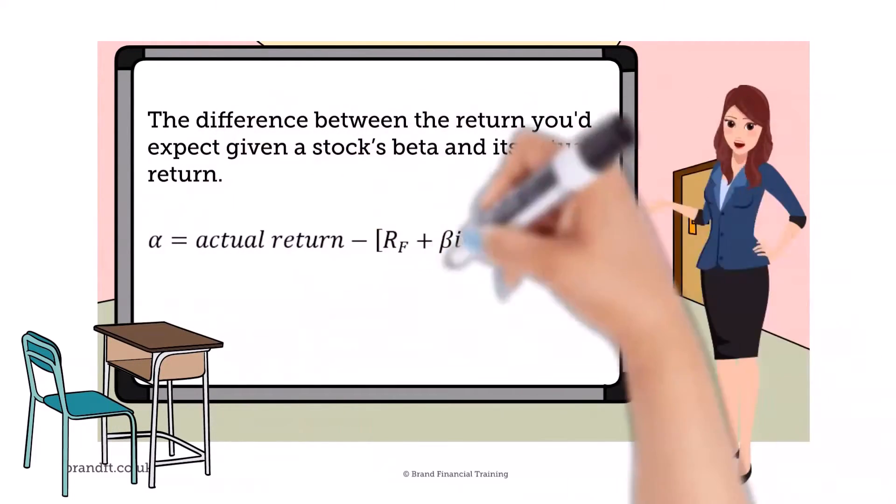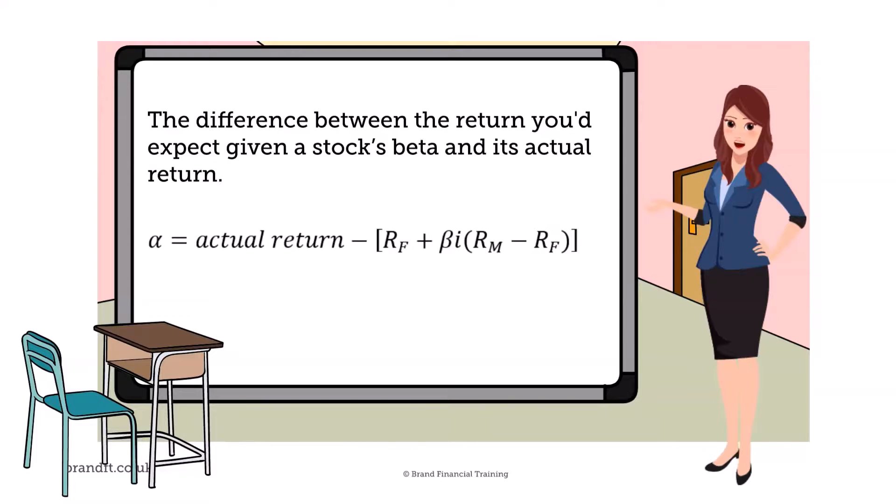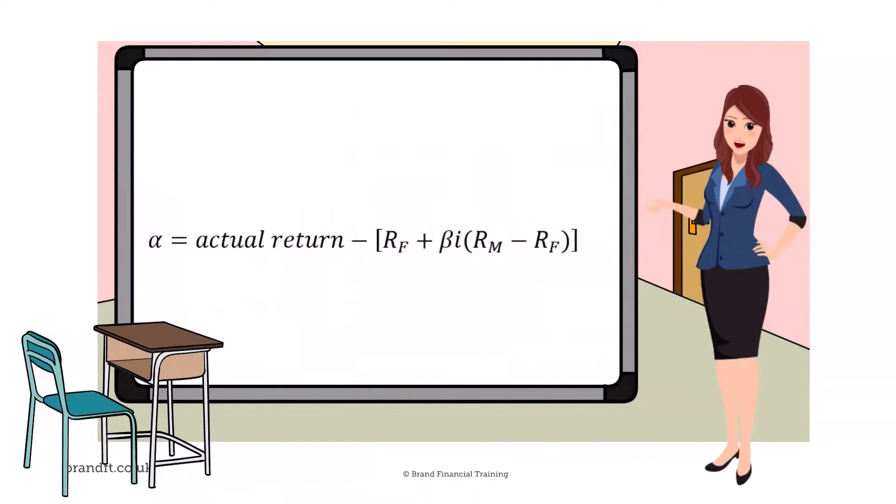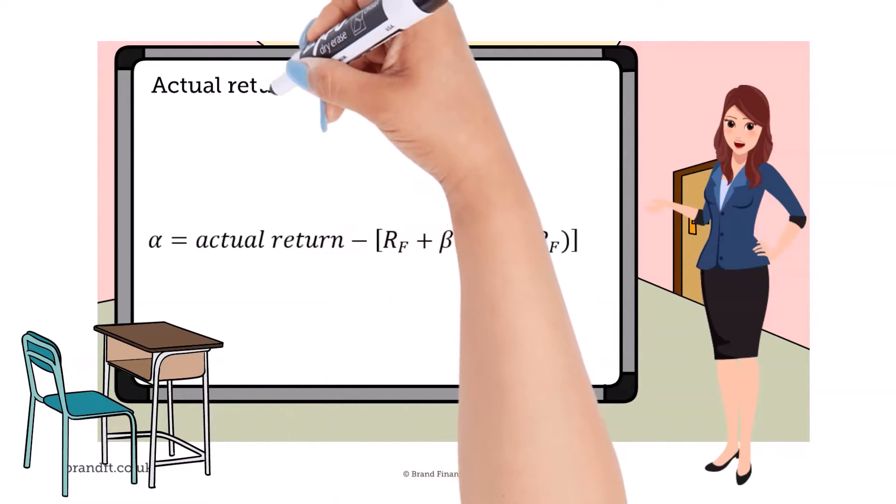Alpha assesses the manager's ability to stock pick. The formula for alpha is: actual return minus [Rf + β(RM - Rf)]. What we're working out here is the rate of return that is not predicted by a model such as the Capital Asset Pricing Model. We are using the actual return rather than the expected return.